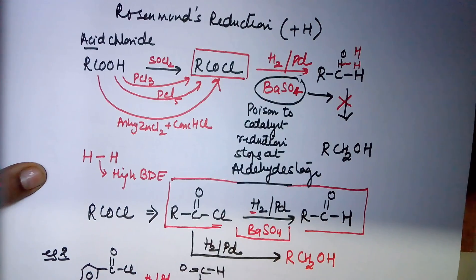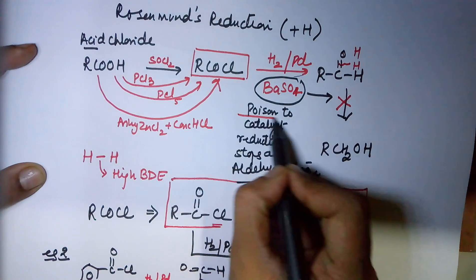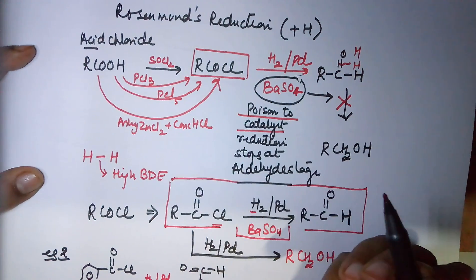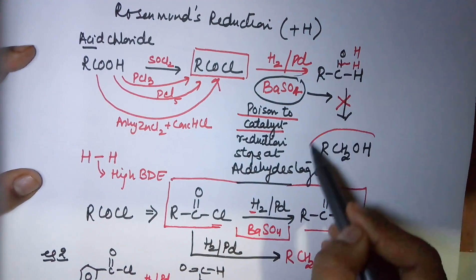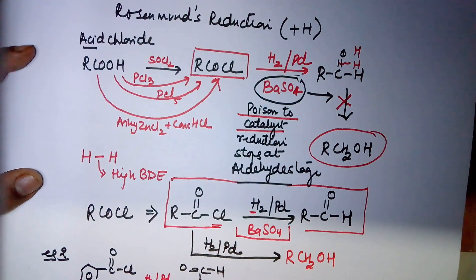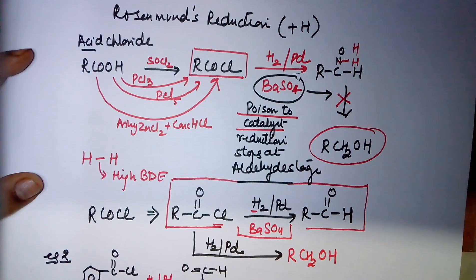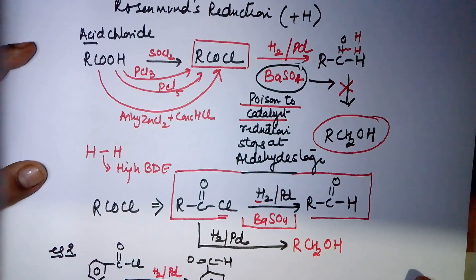And barium sulfate is essential so that the reaction stops at the aldehyde state. The function is that it poisons your catalyst - it is acting as a retardant, that is, it controls the reaction, does not accelerate the reduction to the alcoholic stage. With this I conclude the reduction process given by Rosenmund. Thank you, have a good day.